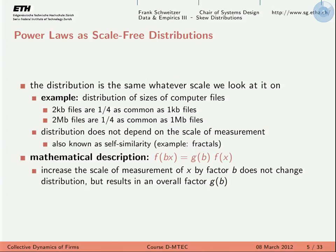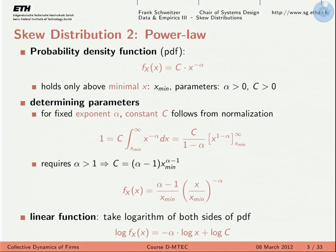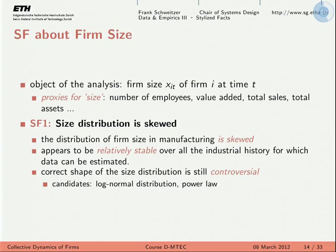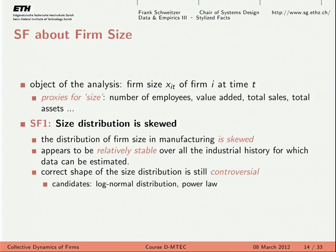The stylized fact points to the fact that whether the distribution is power law or log-normal is controversial — we cannot really distinguish between the two. Now let's look at this in detail. This data is analyzed by colleagues from Boston and covers all publicly traded U.S. manufacturing companies (SIC codes 2000–3099) over 20 years. Firm size is proxied by sales. What we see in this plot is a symmetric, parabolic shape — it looks like a Gaussian distribution.